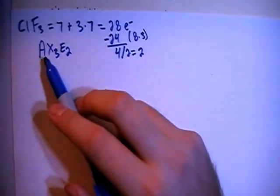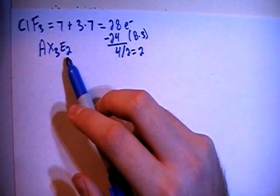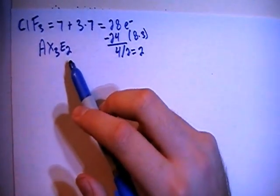Meaning one central atom surrounded by 3 peripheral atoms, and the central atom also has 2 non-bonding pairs of electrons.